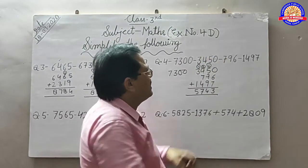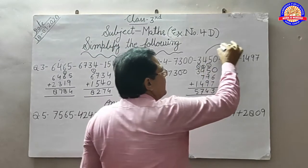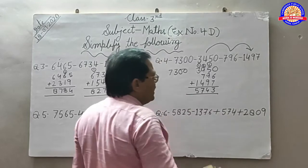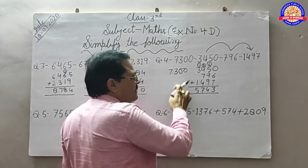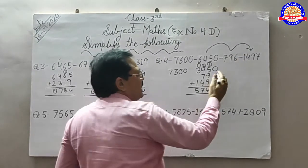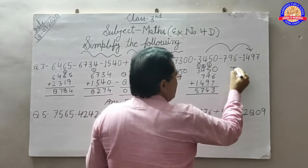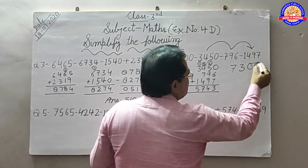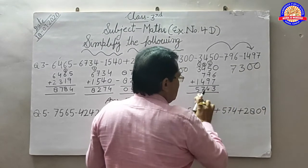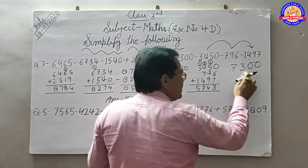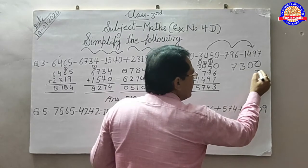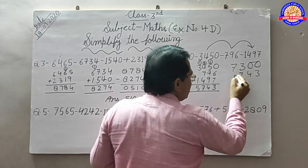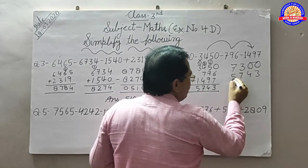यह आपने इनको plus किया, और यह नंबर जो आप पहले करते हैं यह ऊपर जाएगा: 7, 3, 0, 0. अब इसके नीचे यह नंबर लिखेंगे: 3, 4, 7, 5.